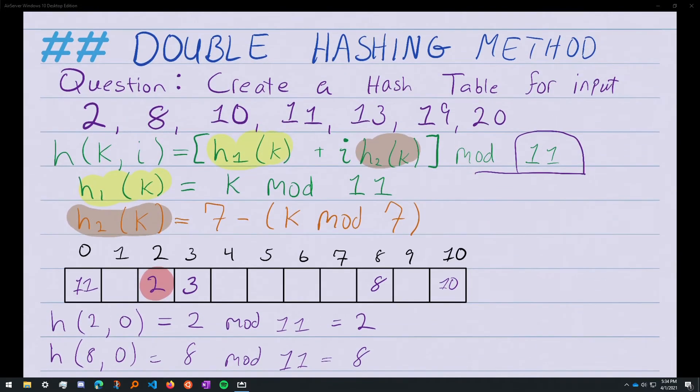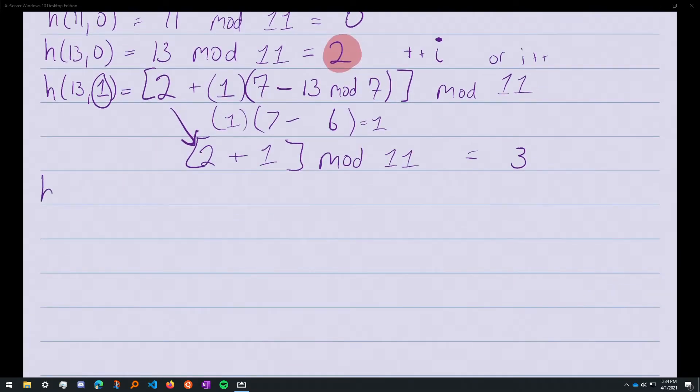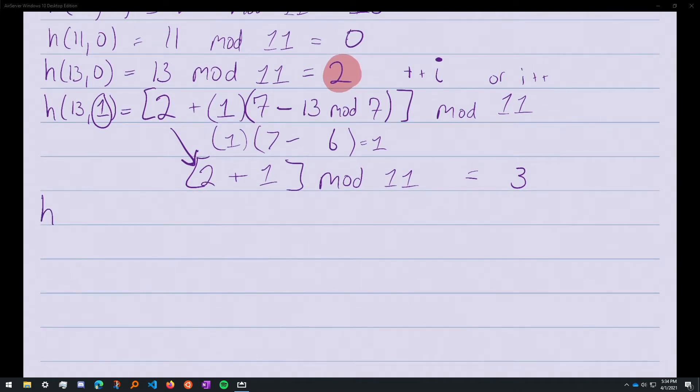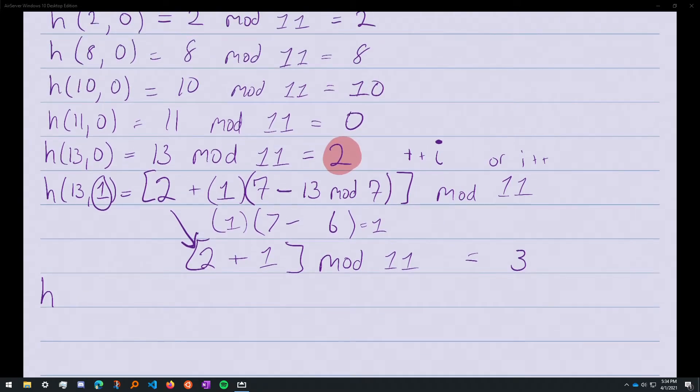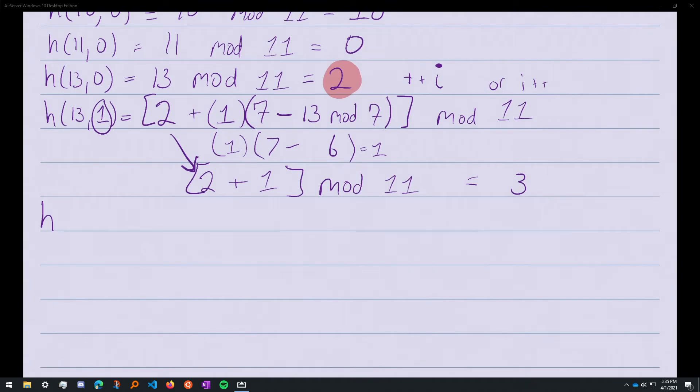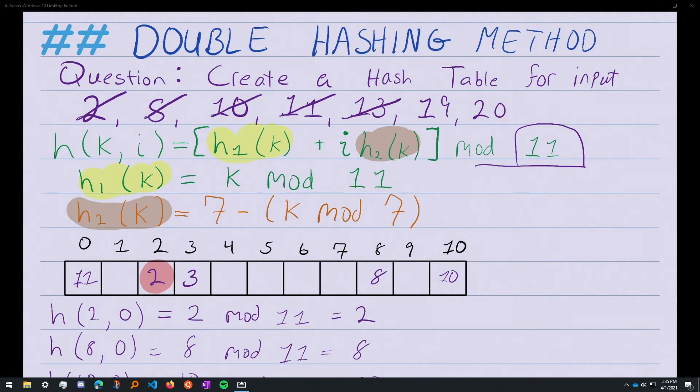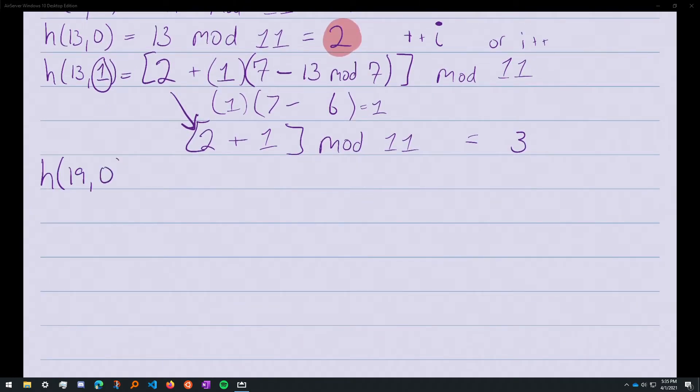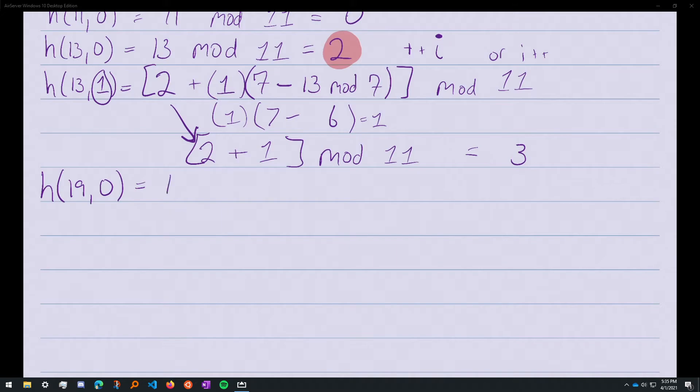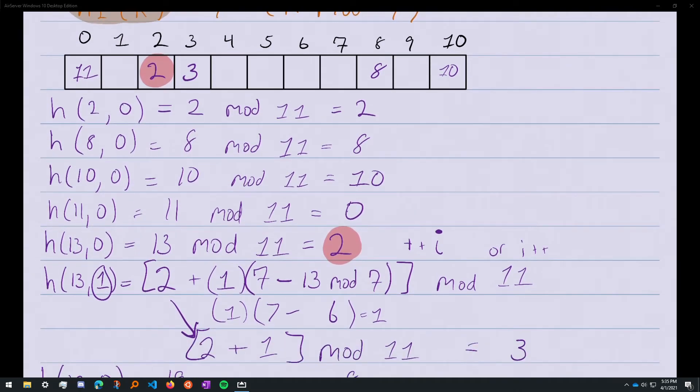Now we're done with 13 and we're at 19. So i does not continue to be 1 here. Remember, i keeps track of each input's attempt to go into the array. So we have h(19,0). 19 mod 11 yields 8. Do we have a collision? We do, right here.